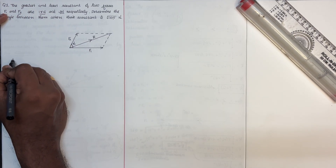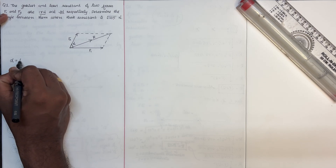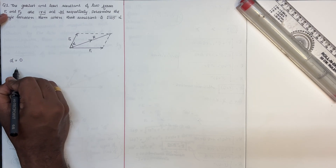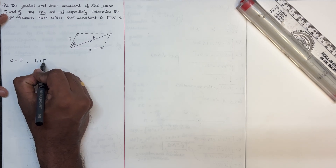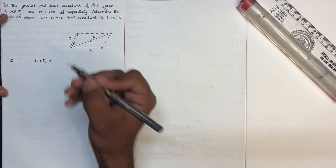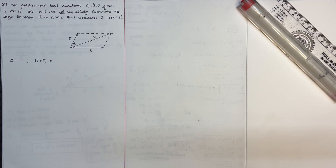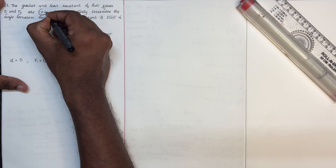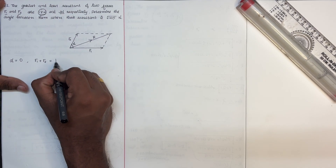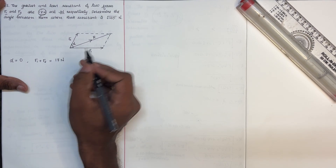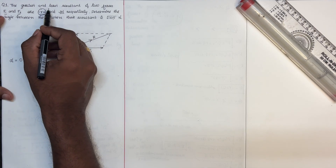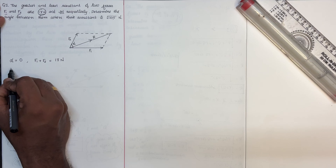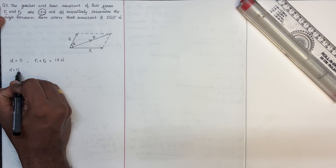Let's look at alpha. Alpha is equal to 0, the resultant is maximum — that is, F1 plus F2. The maximum resultant value is 17N. The least resultant is 3N, when alpha equals 180 degrees.